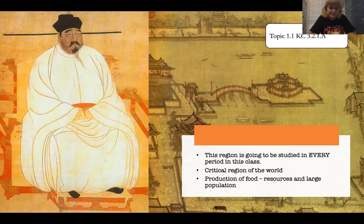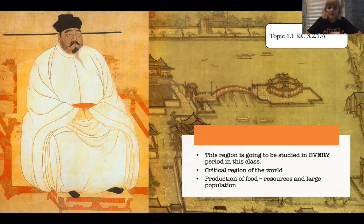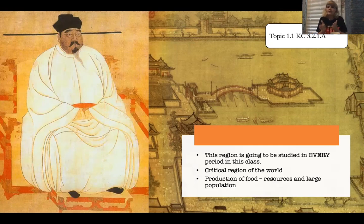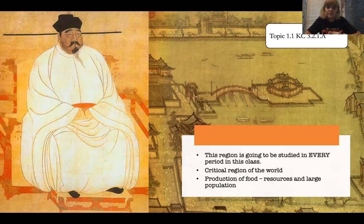This region — China — is one of the most influential in world history. Other areas in East Asia are going to be deeply influenced by China. Even today, people in Japan use a system called kanji, which comes straight from the original Chinese written language. Same with Korea — although the Korean alphabet has changed a bit, it can still use those original Chinese characters. A lot of religion that came from China was also adopted in Korea and Japan.